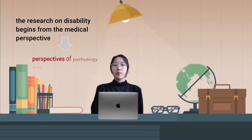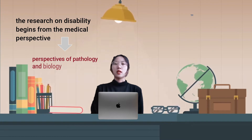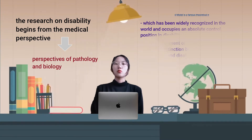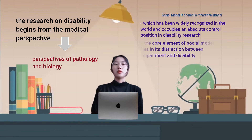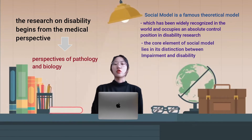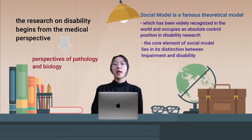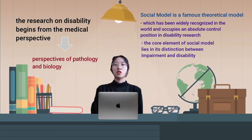Then, one of the basic international trends in disability research is the introduction of social models. The social model is a famous theoretical model put forward by British disability researchers in the 1980s, which has been widely recognized in the world and occupies an absolute dominant position in disability research.